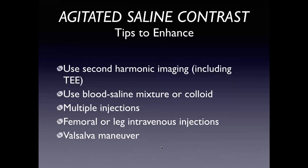Studies have shown that a femoral or leg intravenous injection enhances PFO detection. The reason is that blood from the lower extremity gets directed towards the interatrial septum by the Eustachian valve — a remnant of embryology. During fetal life the Eustachian valve directed oxygenated blood from the placenta across the patent foramen ovale to the left side of the fetal circulation. Because the Eustachian valve directs blood directly towards the atrial septum, it has been shown to have a greater effect for PFO detection. Then of course there is the Valsalva maneuver.